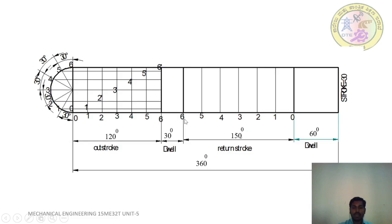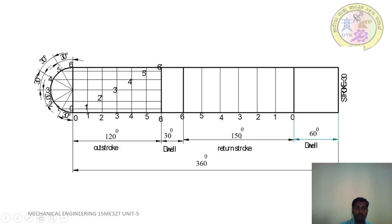For the return stroke, name the points 6, 5, 4, 3, 2, 1, 0 in reverse. Name the semicircle points as 0, 1, 2, 3, 4, 5, 6.